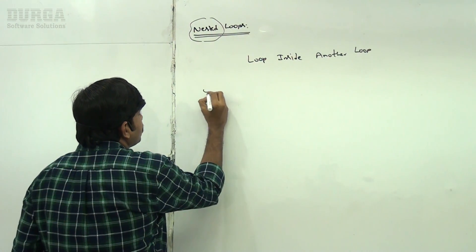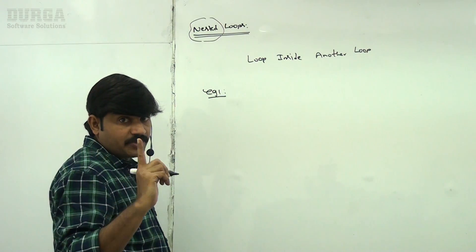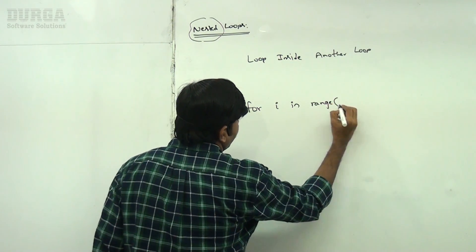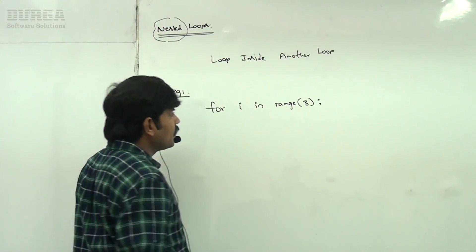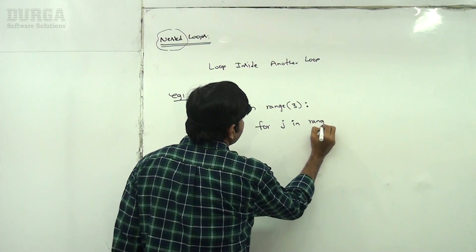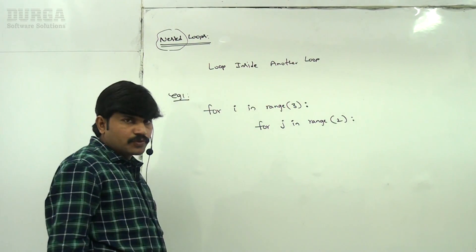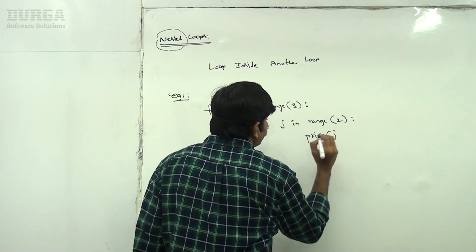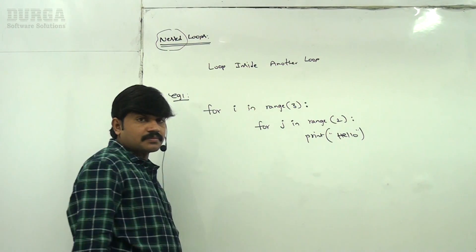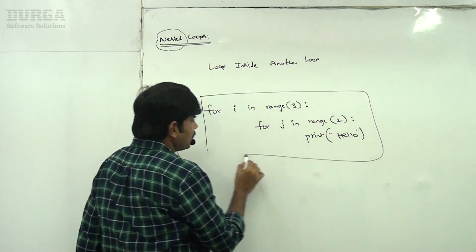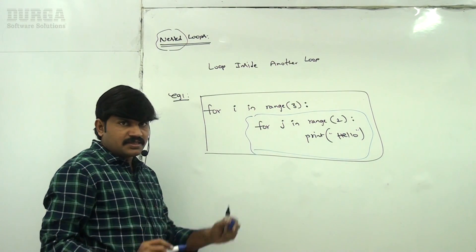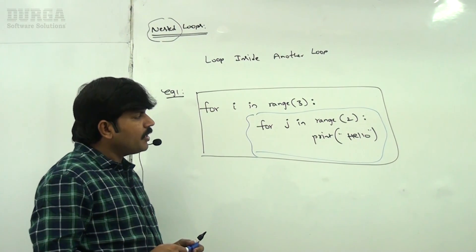Let me give a small example. My requirement is: for i in range(3), and inside it, for j in range(2), then print hello. So this is a for loop inside another for loop — a nested loop. Can you please tell how many times hello will be printed?